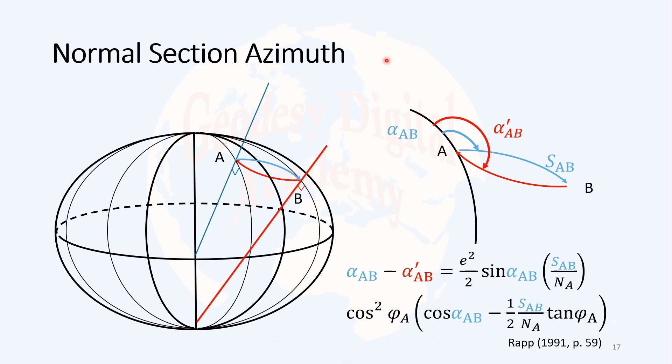I have a vertical or normal plane containing the normal at point B. If this plane goes through point A as well, we will have another normal section. Obviously, these two normal sections do not coincide.